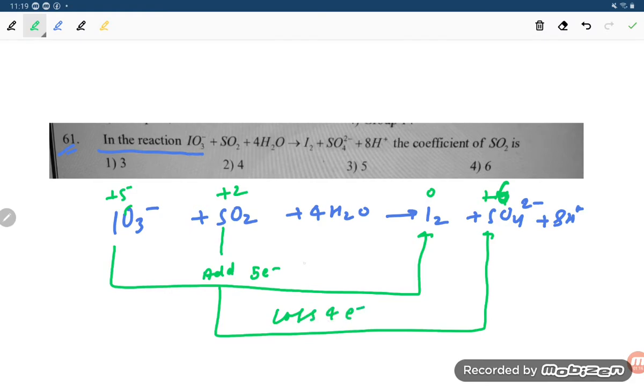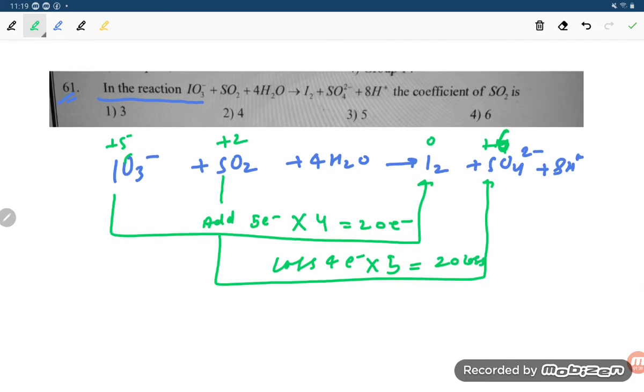So what we have to do? Multiply to equate. So multiply by 4 and multiply by 5 to get 20 electrons added and 20 electrons lost. So let us solve it out student.